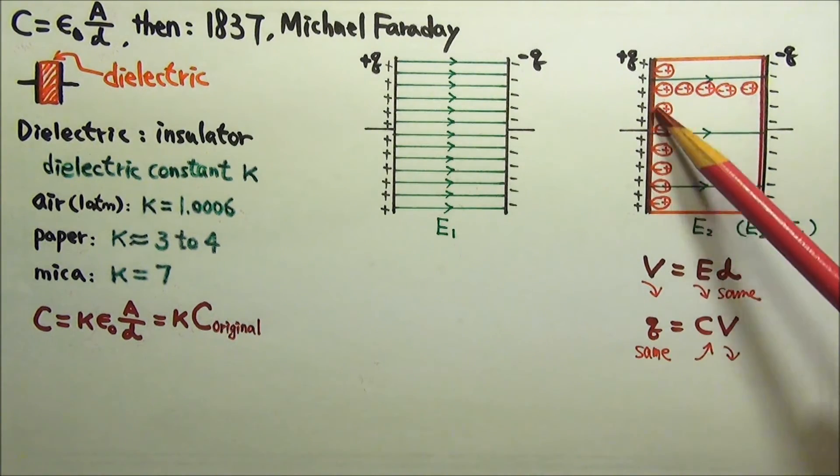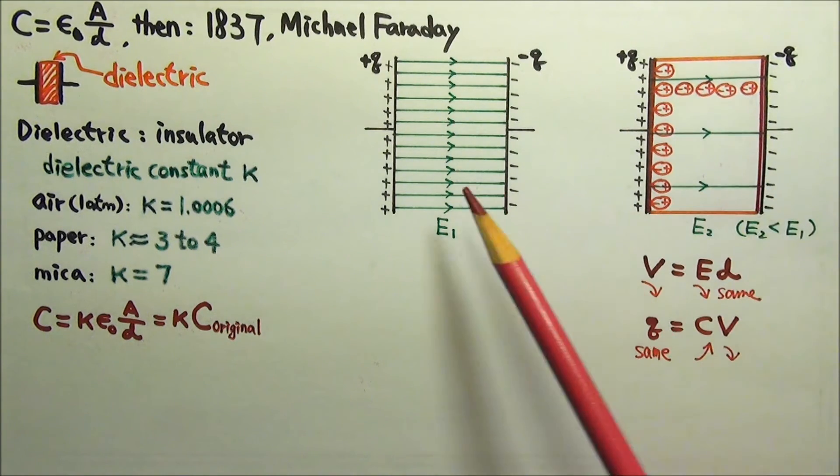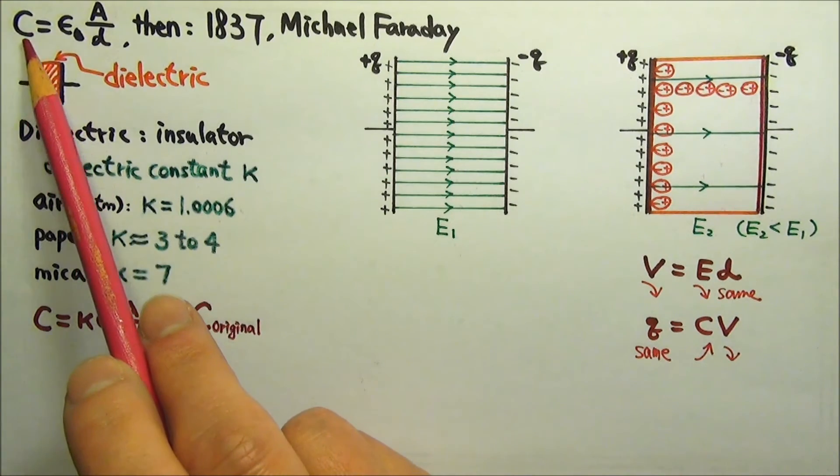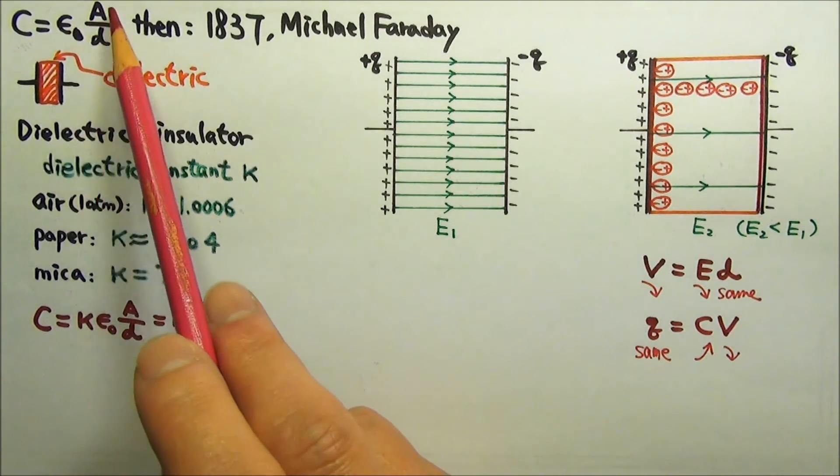So a capacitor filled with dielectric material has a larger capacitance. Without dielectrics, the capacitance of a parallel plate capacitor is C equals to epsilon naught times A over D.